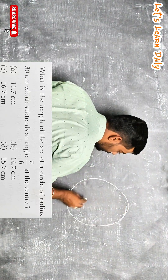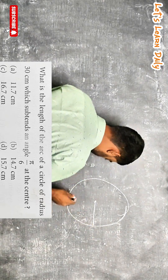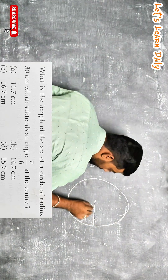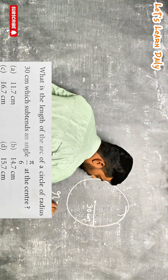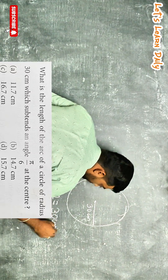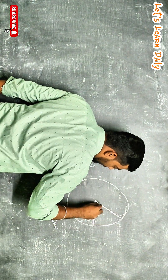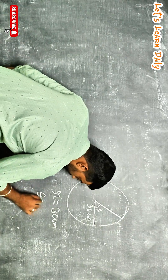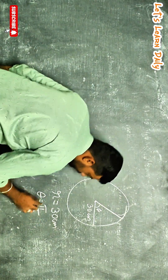The circle has radius given by 30 centimeter. R value is 30 centimeter. It forms an angle theta, so theta value is 5π/6.